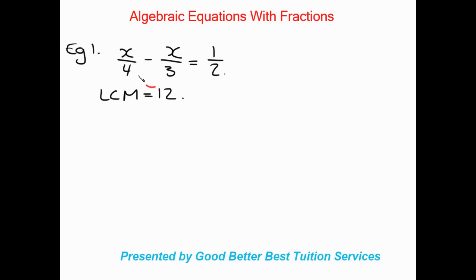With that 12, the first step is we're going to divide it by the 4. Once we divide 12 by 4 we get 3, and then we times it by the numerator. So 12 divided by 4 is 3, and 3 times x is 3x. Now we're going to look at the next term.